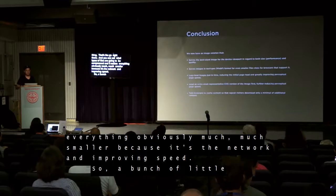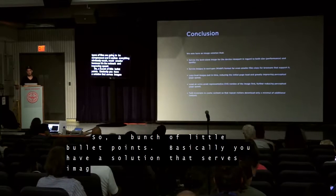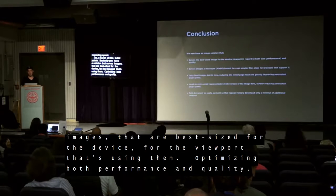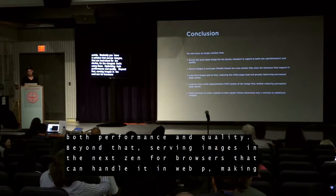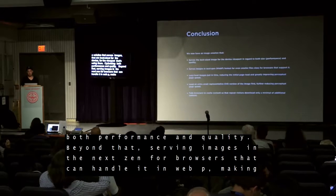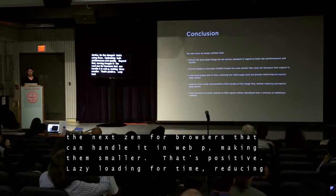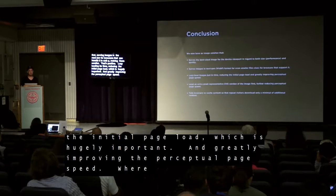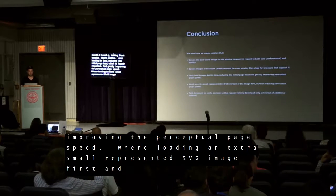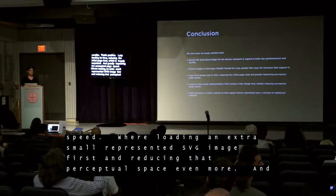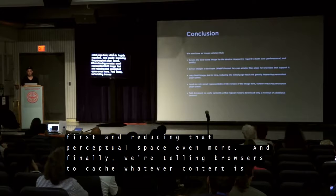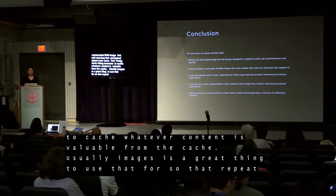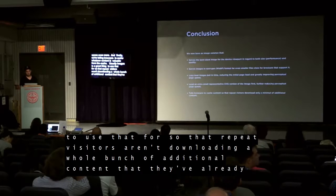So to summarize: we have a solution that serves images best sized for the device and viewport, optimizing both performance and quality. Beyond that, we're serving images in next-gen WebP format for browsers that can handle it, making those images even smaller. Lazy loading images for just-in-time delivery, greatly reducing initial page load. We're loading an extra-small representative SVG image first to reduce perceptual page speed even more. And finally, we're telling browsers to cache content they've already downloaded so repeat visitors aren't downloading the same content again.